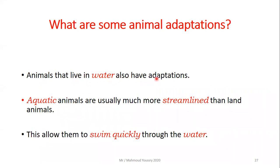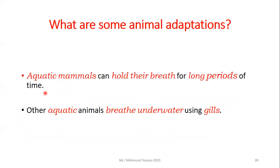Animals that live in water also have adaptations. Aquatic animals are usually much more streamlined than land animals - their body is shaped to move easily in the water, which allows them to swim quickly. Aquatic mammals can hold their breath for long periods of time, like whales. Other aquatic animals breathe underwater using gills.